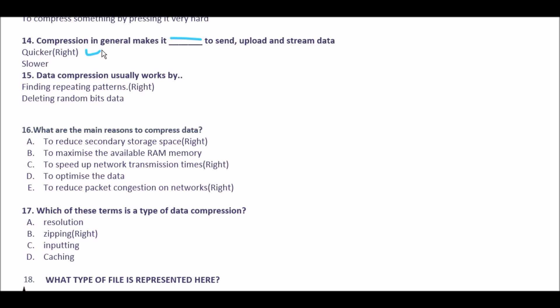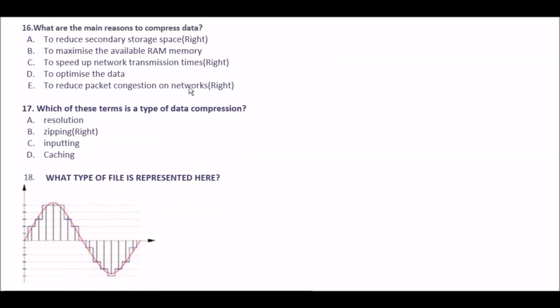Next question: data compression usually works by — option A finding repeating patterns, option B deleting random bits of data. The right answer is option A: finding repeating patterns.